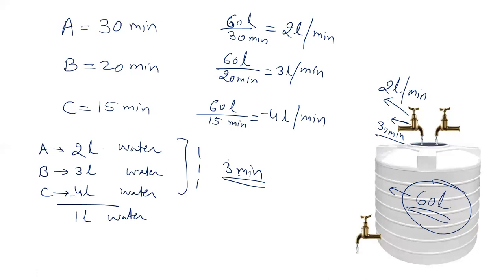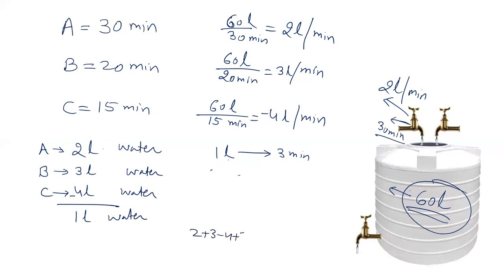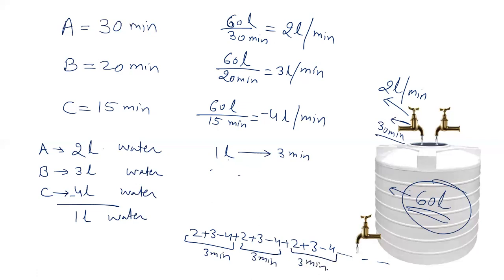We need to fill 60 liters. The pattern is 2 plus 3 minus 4 equals 1 liter every 3 minutes. This cycle continues: 1 liter in 3 minutes, 2 liters in 6 minutes, 3 liters in 9 minutes, and so on. This process continues until we reach a value close to 60.